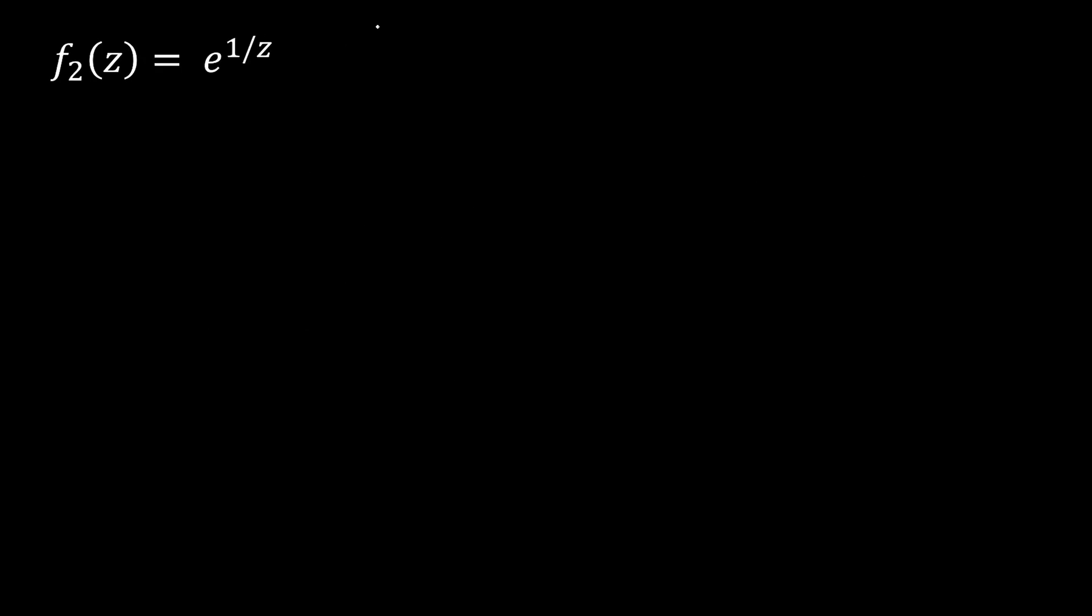For our second function, we have e to the 1 per z. There's a singularity here at z equals 0. So, if we expand this function about z equals 0, we get the following. Here, we can see that we only have negative powers of z besides our first term. This is what we call an essential singularity. An essential singularity is where we just seem to have infinitely many terms with negative powers of z.